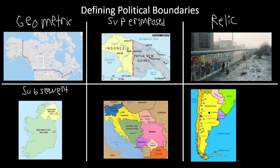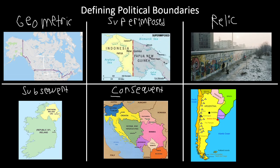The next boundary type uses the example of Yugoslavia. Yugoslavia was one big country but set up as different states — that's a subsequent boundary as well. Remember, boundaries can be more than one type, like Indonesia/Papua New Guinea being both geometric and superimposed. With Yugoslavia, this is separating cultural differences because these are all nation-states. Ethnic diversity was a big part of the breakup of Yugoslavia — that balkanization. These types of boundary changes are called consequent boundaries. Think of 'C' in consequent for culture. Consequent boundaries are put in place over time due to cultural differences.